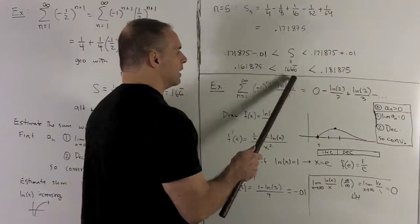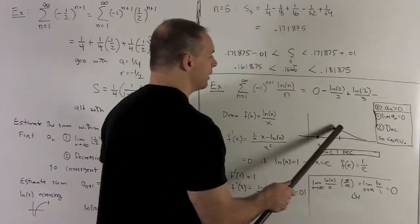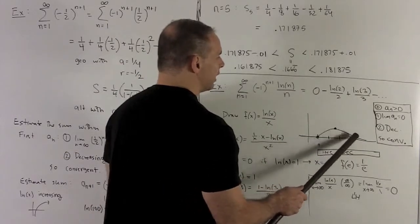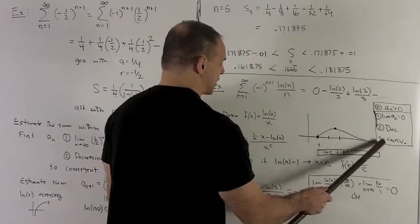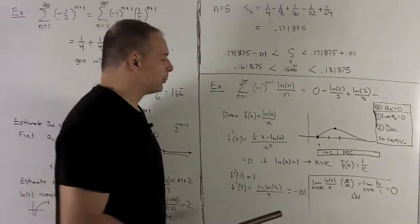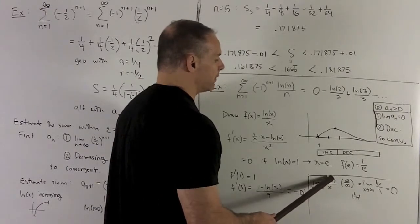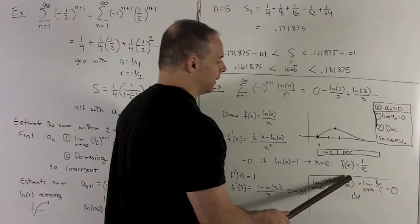All right. We already know that the natural log of x over x, once I get past 1, is always positive. So, this thing is decreasing. It's going to go asymptotically to some lower limit. So, let's figure out what that limit is. I take the limit of natural log of x over x. We put in for infinity. That gives me infinity over infinity.